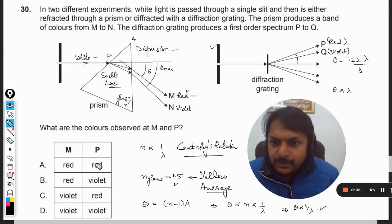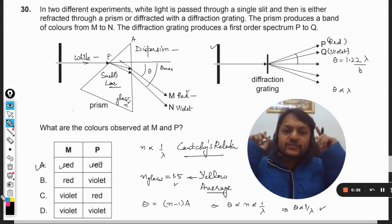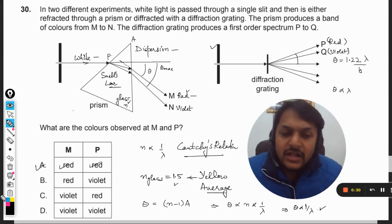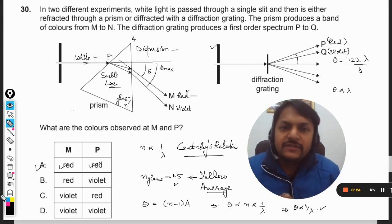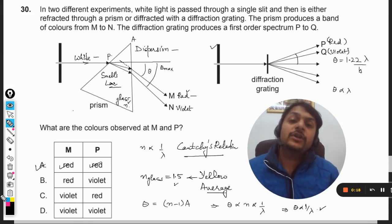So it means P is red and M is also red, so yes, the answer will be A in our case. There is much information I have given here which is not required for IB, I believe, and it's not given in your books also, but the background information is important for this question.